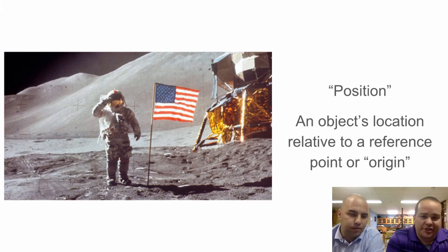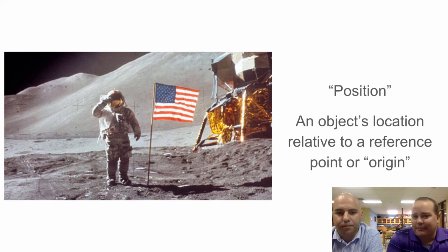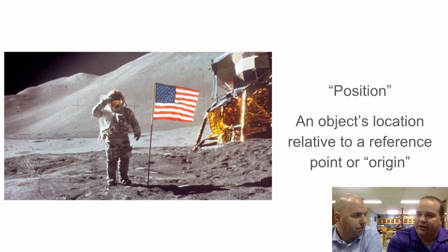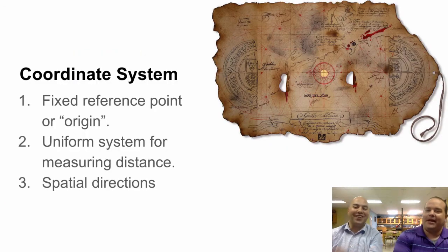Okay. So position is an object's location relative to a reference point or an origin. So sometimes people get really confused, like, well, what's the origin talking about? Well, if we think into math, we have the coordinate plane that we always talk about. Well, where do you always start in the coordinate plane? You always start at the origin where zero zero is located, which Mr. Spencer, didn't you want to talk about the coordinate system? I do. Oh, there you go. There we go.